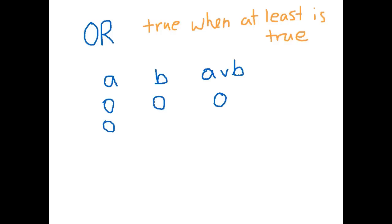And if we had A is false and B is true, then at least one of those is true. So we'll go with true.